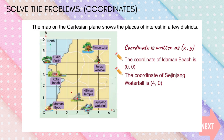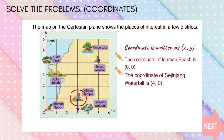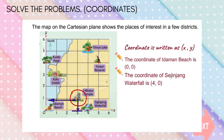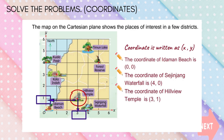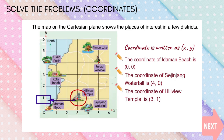Now look at Hillview Temple. Write the coordinate of X then the coordinate of Y. The coordinate of Hillview Temple is (3, Y).